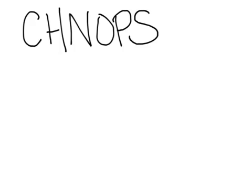Something else we've already talked about is cycling of matter. We talked about this at the beginning of the year when we were doing organic molecules and talking about CHNOPS — the six elements most abundant in living organisms: carbon, hydrogen, nitrogen, oxygen, phosphorus, and sulfur.